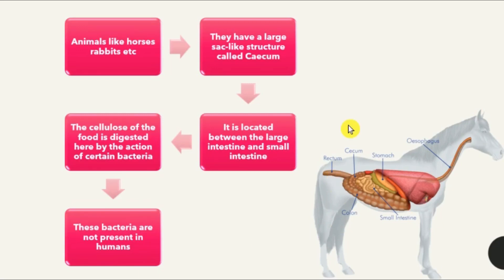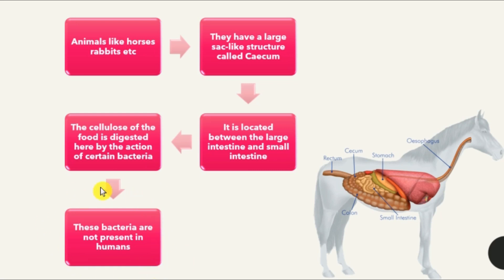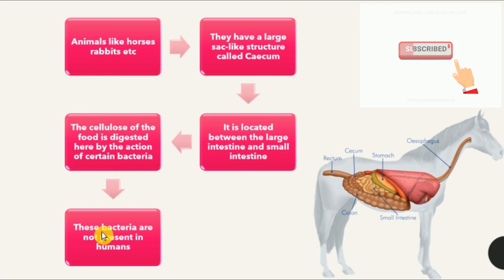Coming to animals like horses and rabbits, they have a large sac-like structure called the caecum in their body, located between the large intestine and the small intestine. The cellulose in food is digested here by the action of bacteria present in the caecum. These bacteria are not present in humans, and hence humans are not able to digest cellulose. So the bacteria in the caecum help these animals digest cellulose.